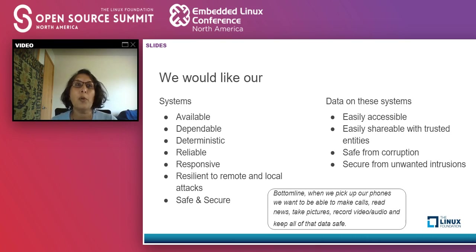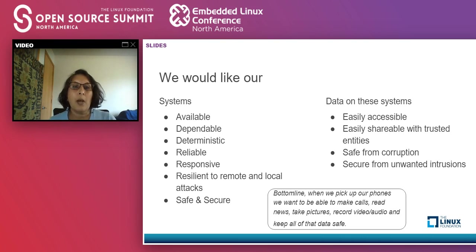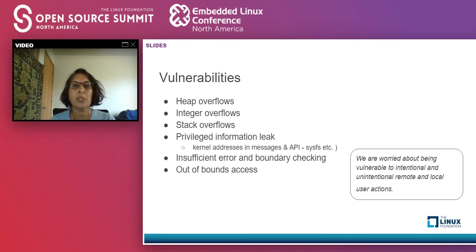We want our data to be secure as well — accessible wherever we are, whether we're traveling, shareable with trusted entities, but also safe from corruption and unwanted intrusions. With all of that in mind, what are the things that stop us from achieving our goals? This talk focuses on software-related issues that prevent us from keeping our systems safe and available.